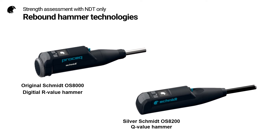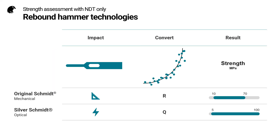I would like to say something about rebound hammer technologies for those who are not familiar with them. Here you can see the original Schmidt OS8000, which is a digital R-value hammer, and the Silverschmidt OS8200, which is a Q-value hammer. Both types of hammer work on the same principle: we perform an impact to measure a rebound value and convert this using a correlation curve into a compressive strength. The original Schmidt was invented by PROCEQ in the 1950s and measures a rebounded distance. The Silverschmidt was invented by PROCEQ in 2007 and uses an optical measurement of the velocity difference before and after the impact.